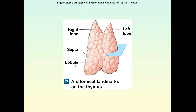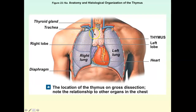What the thymus does is it matures your T cells. If you look at number two, there is something called the blood-thymus barrier, which is very similar to the blood-brain barrier. The astrocytes created an extra layer on your blood capillaries so that materials from the bloodstream don't enter into the neurons, into your brain. Same thing here — we have a barrier of cells that protect the cells within the thymus from unwanted materials in the bloodstream.